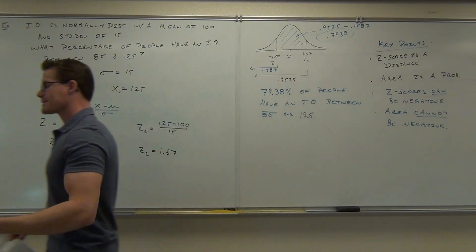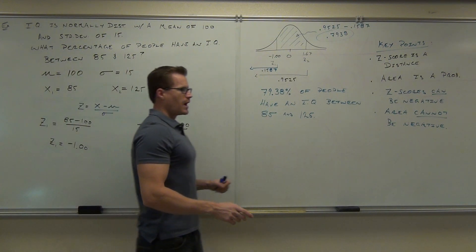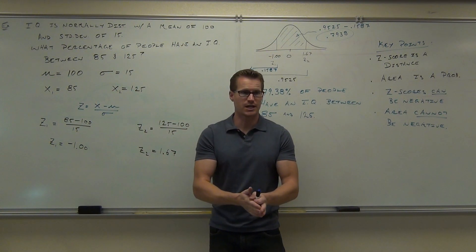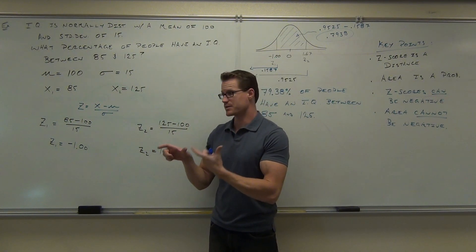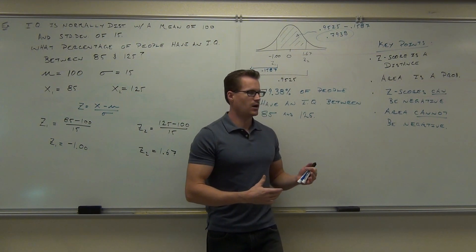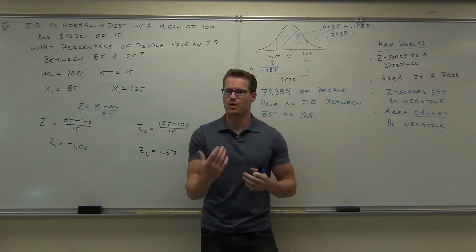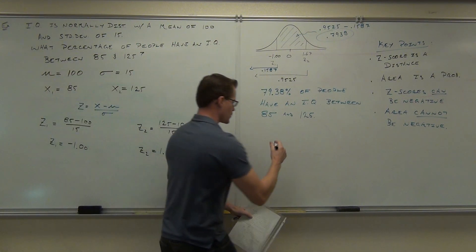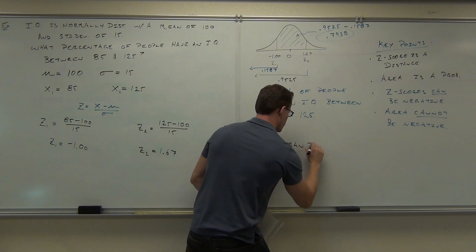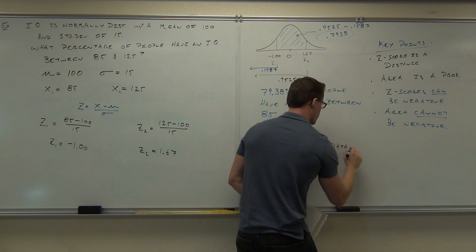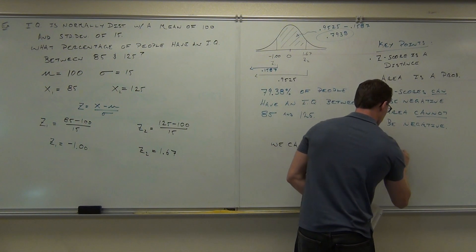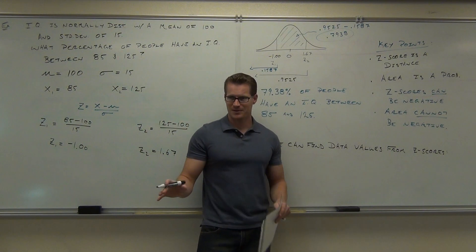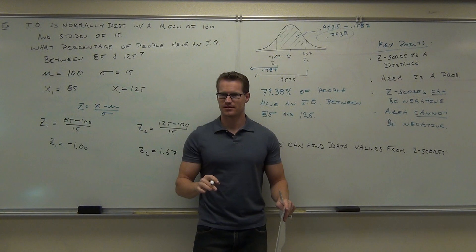There's one last thing we can do here. Remember how you had to look up a z-score — especially for the thermometer problem — for the bottom 10% or top 80%? We realized that bottom 30% and top 70% mean the same thing, and top 90% and bottom 10% mean the same thing. We can take that and actually find a data value that represents that information. So we're going to go one step further: we can find data values from z-scores. We're going to do a little algebra.